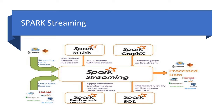Spark Streaming is an extension of the core Spark API that enables scalable, high-throughput, fault-tolerant stream processing of live data streams. Data can be ingested from sources like Kafka, Kinesis, or TCP sockets, and processed using high-level functions like map, reduce, join, and window operations. The processed data can be pushed to file systems, databases, and live dashboards. It enables live streaming of data like log files generated by production web services, with APIs similar to the Spark Core RDD APIs.